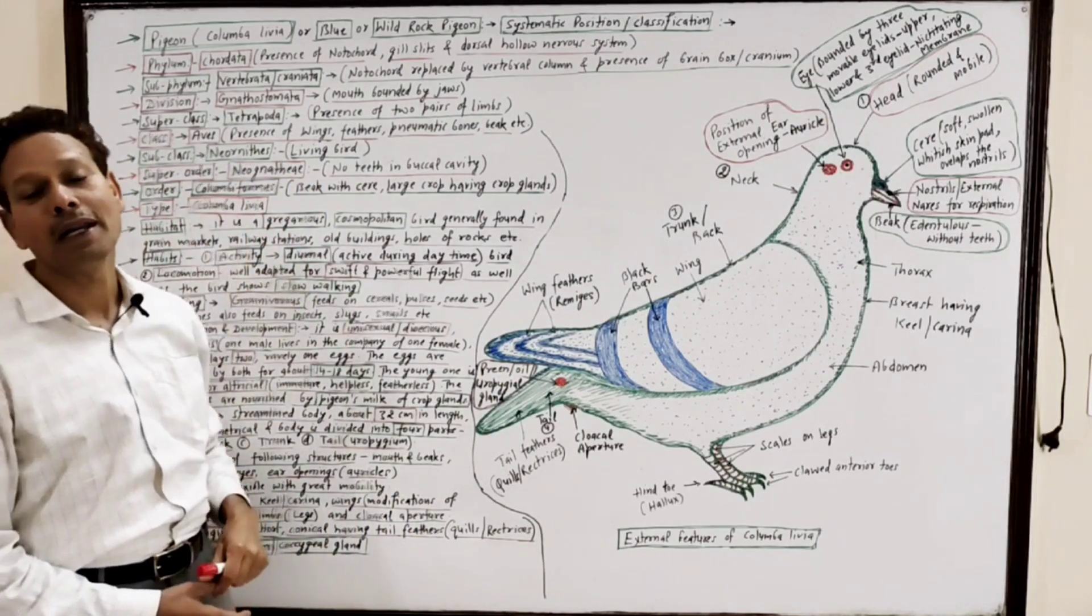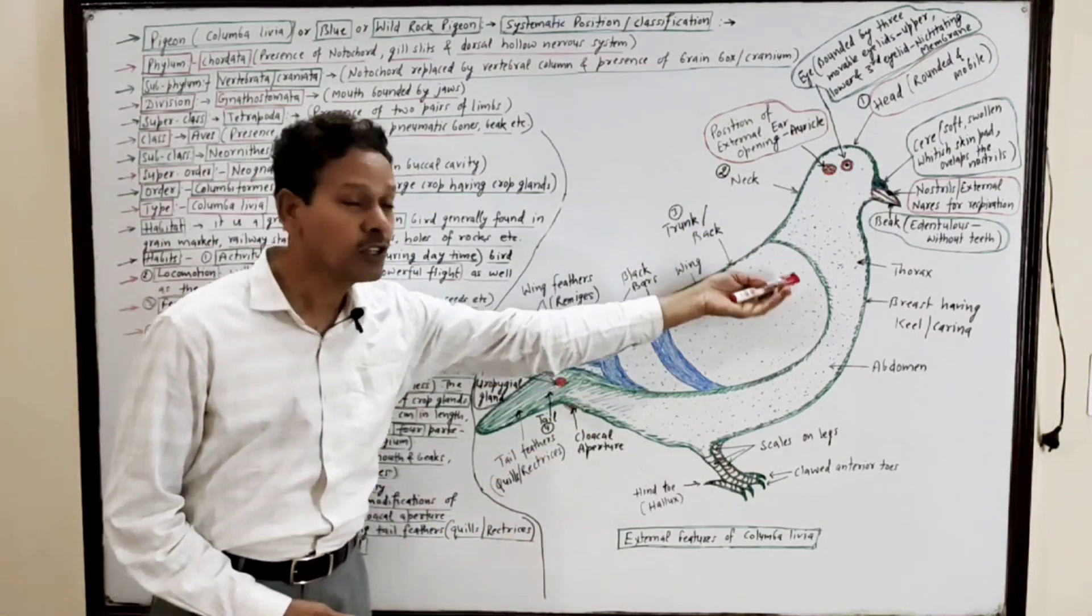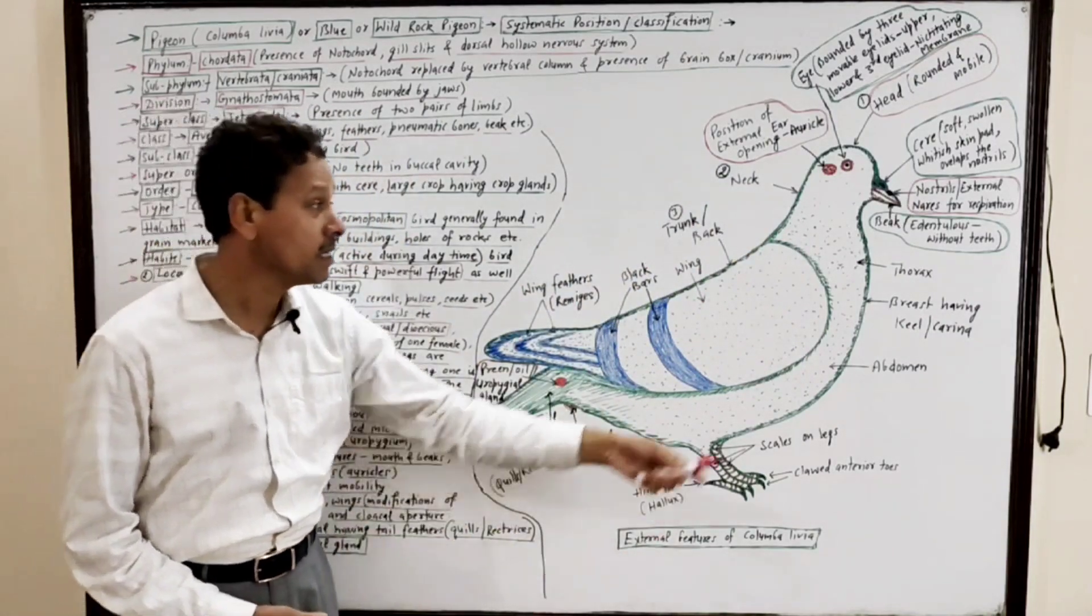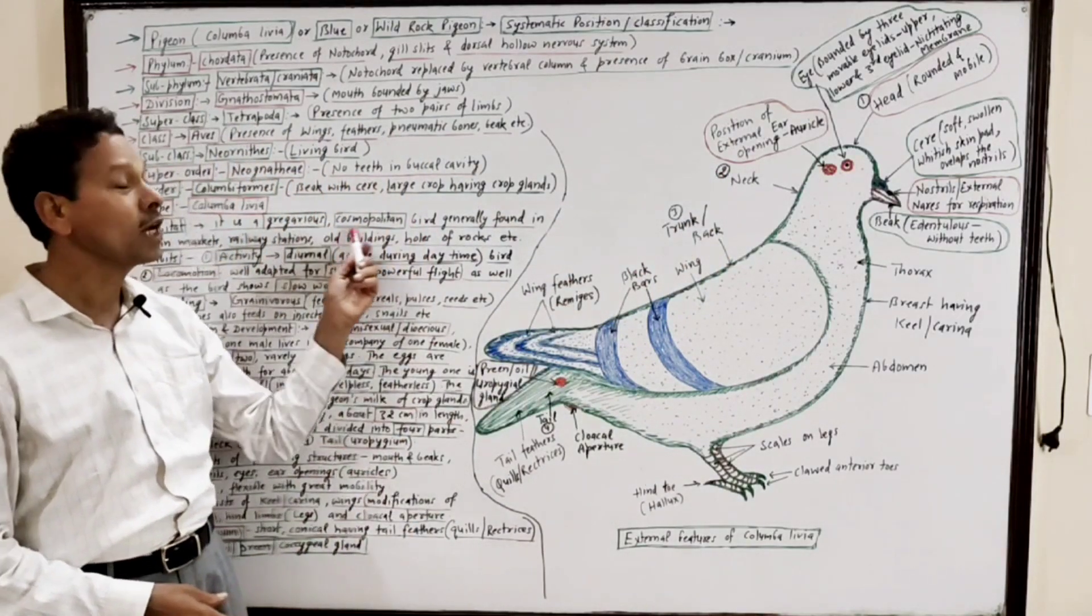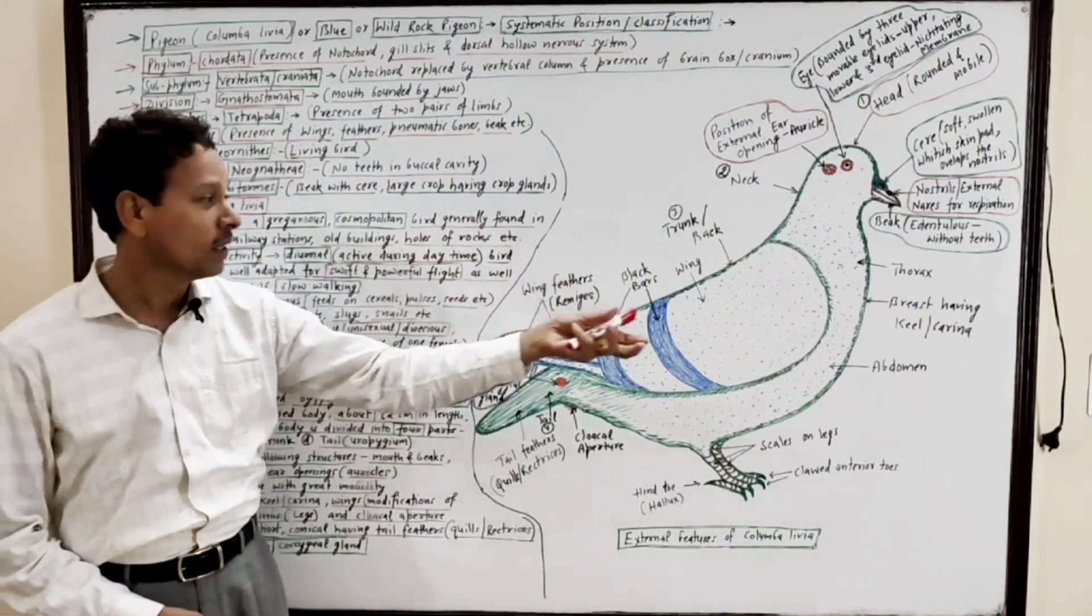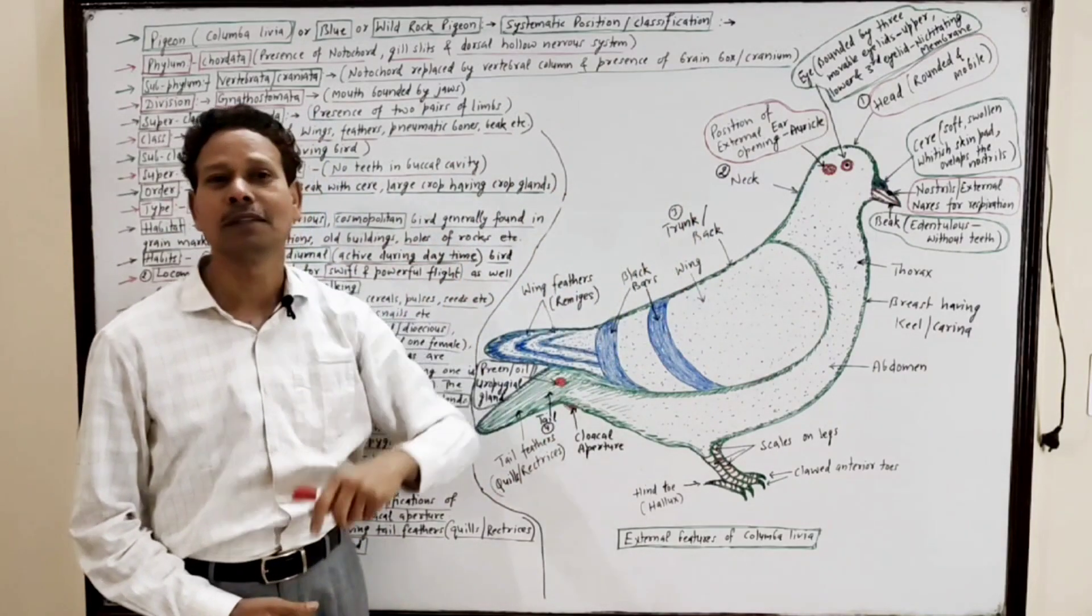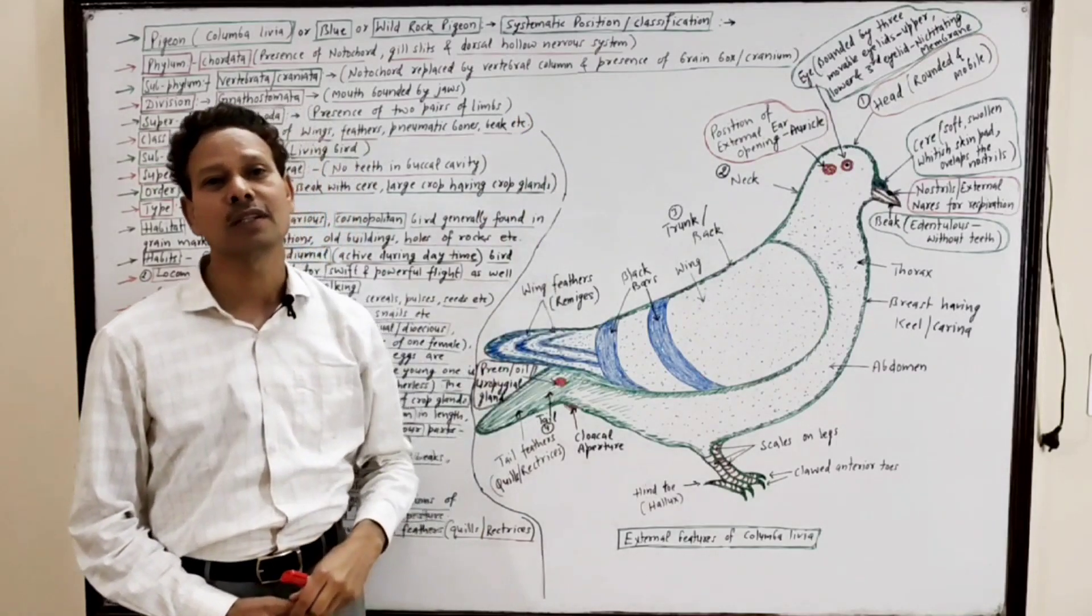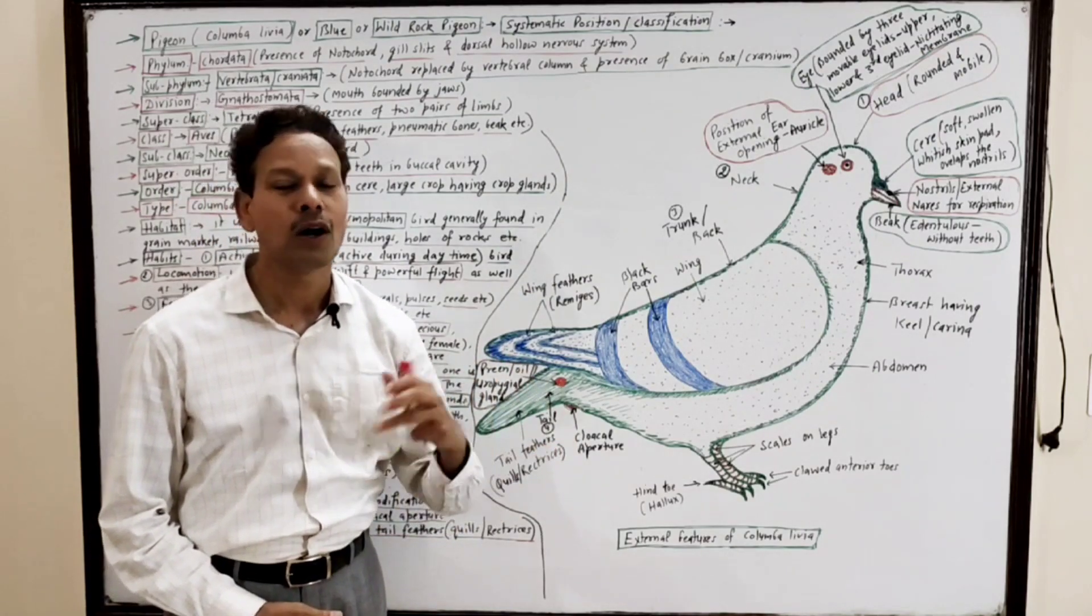Type Columba livia. Habitat - the pigeon is gregarious and cosmopolitan. Cosmopolitan means the bird is found everywhere, generally in grain markets and railway stations, old buildings, and holes of rocks.